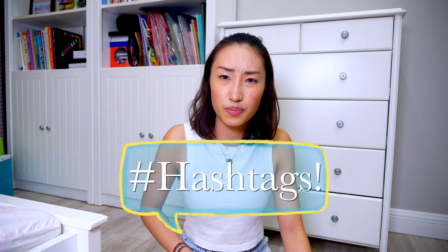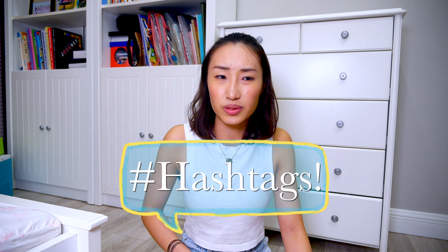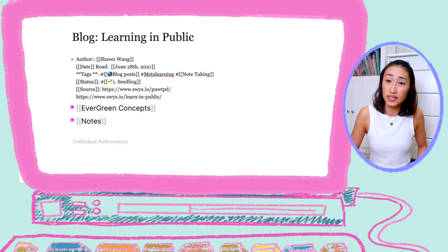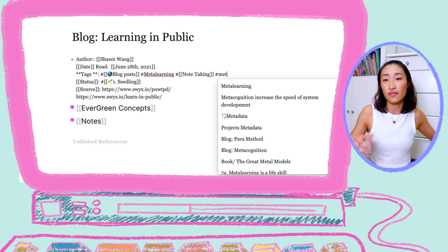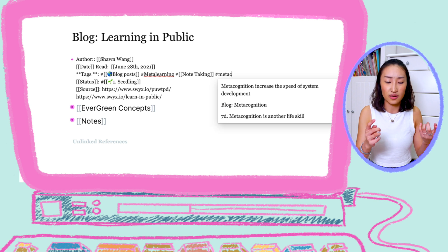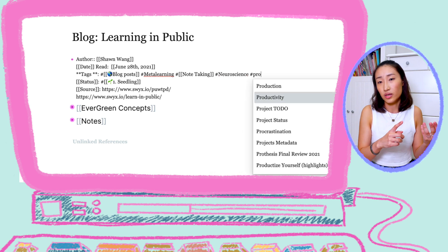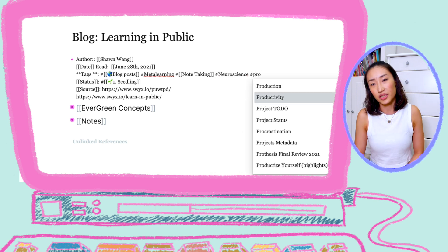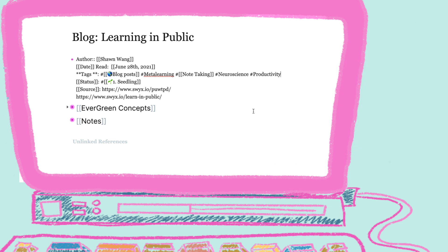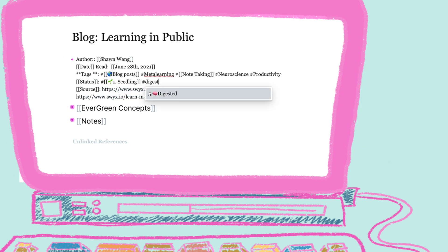The third method is hashtags. It works much like the RemNote hashtag — you can use it for categorizing types of content, categorizing your notes, and tracking where you consumed it, like whether it's a video, podcast, or book. With the tagging system for project status, I can instantly pick up where I left off because I know the status of each project.